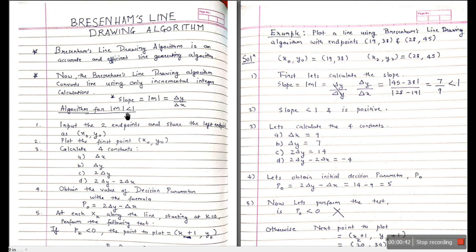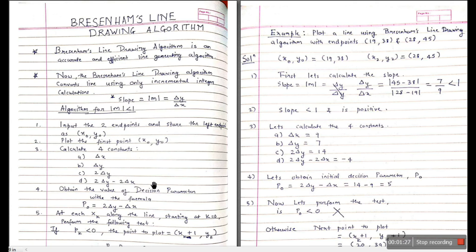If the slope is less than 1 and is positive, the algorithm has 5 steps. First, input two endpoints and store the left endpoint as x0, y0. Then plot the first point, x0 comma y0. Then calculate four constants: delta x is |x2 - x1|, delta y is |y2 - y1|, the third constant is 2 times delta y, and the fourth is 2 times delta y minus 2 times delta x.